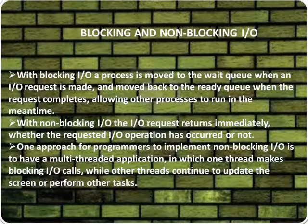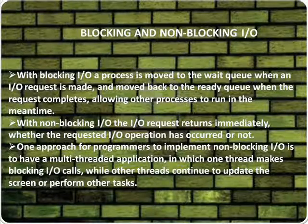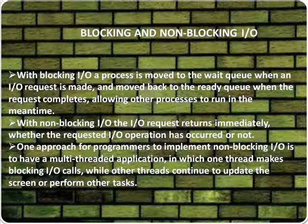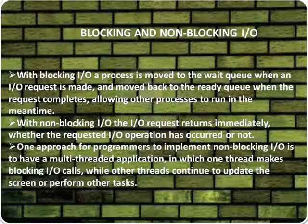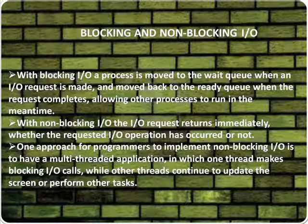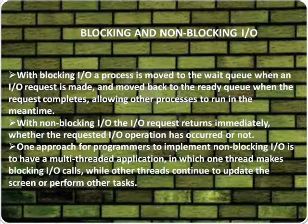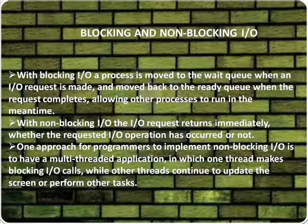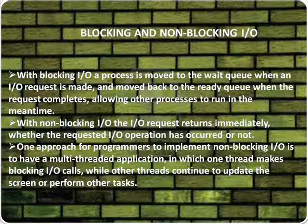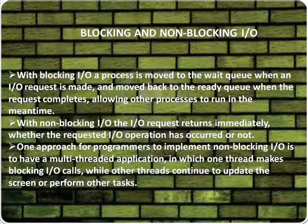Blocking and non-blocking input and output. With blocking I/O, a process is moved to the wait queue when an I/O request is made, and moved back to the ready queue when the request completes, allowing other processes to run in the meantime. With non-blocking I/O, the request returns immediately whether or not the operation has occurred. One approach for programmers is to use a multi-threaded application where one thread makes blocking I/O calls while other threads continue to update the screen or perform other tasks.